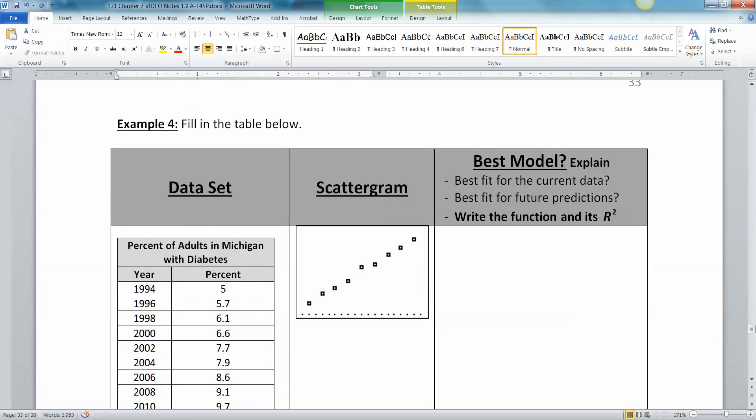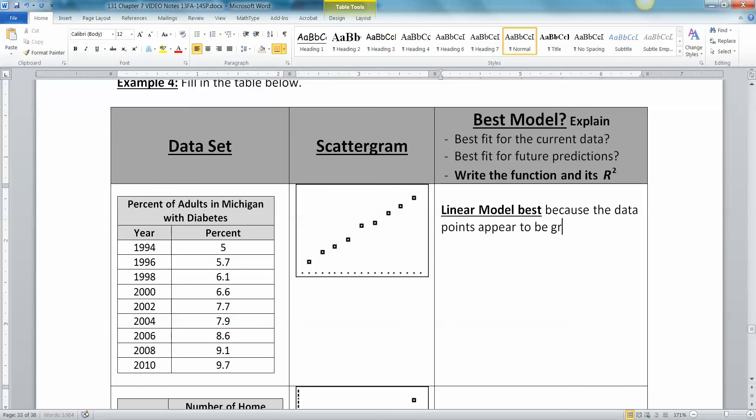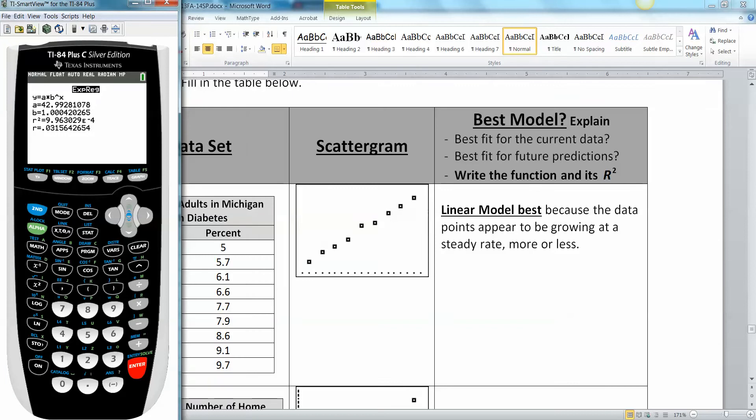Now let's keep going with this comparison of the regression models we have. This is the percent of adults in Michigan with diabetes. You can see there's the data right there, and this is a scattergram already drawn for you from the calculator. This would appear to be a linear model, right? A linear model is best because the data points appear to be growing at a steady rate, more or less. It looks very linear.